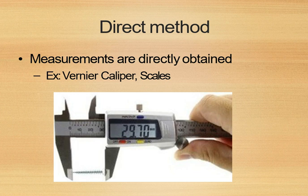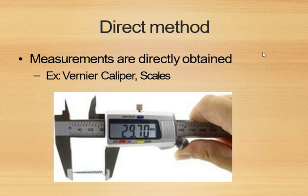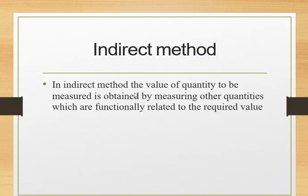In the indirect method, the value of the quantity to be measured is obtained by measuring other quantities which are functionally related to the required value. In the direct method you directly get the height or width using scales, but in the indirect method the output quantity depends upon different types of parameters. We have to calculate those parameters and after doing some calculations we get the actual value, which is why it is called the indirect method.